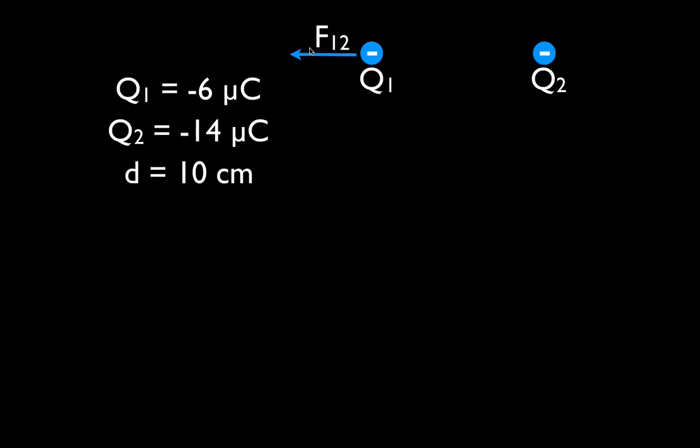And we would designate that force as F12. F for force, this says 1, 2. This is not 12. This is the force on 1, on charge 1, from charge 2. So, that's how we figure out the direction of the charge.